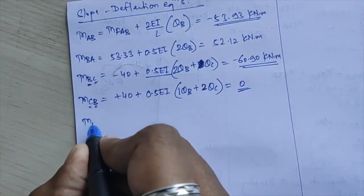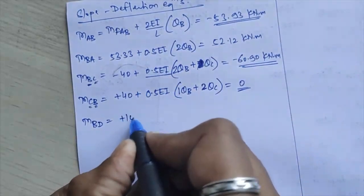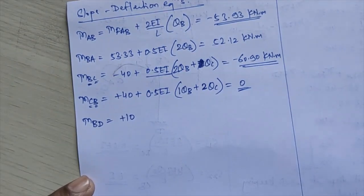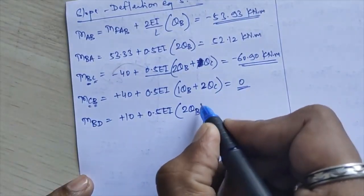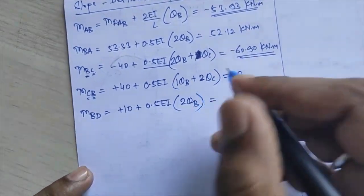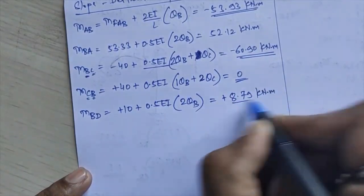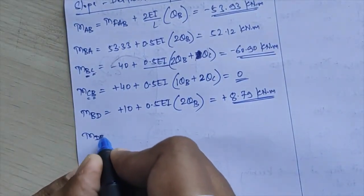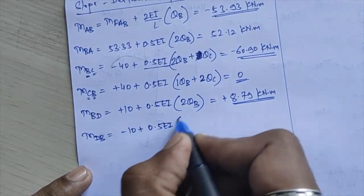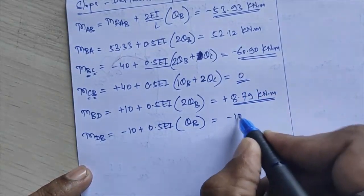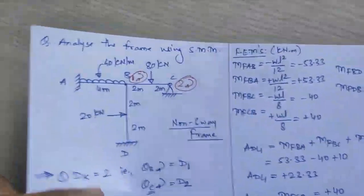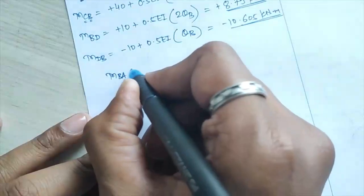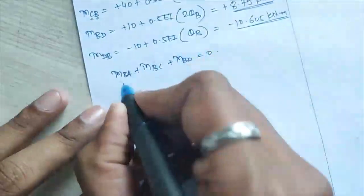MBD = MF_BD + (2EI/L)(2θB + θD) = +10 + 0.5EI×2θB (θD = 0, fixed support) = +8.79 kNm. MDB = MF_DB + (2EI/L)(θB) = −10 + 0.5EI×θB = −10.605 kNm.